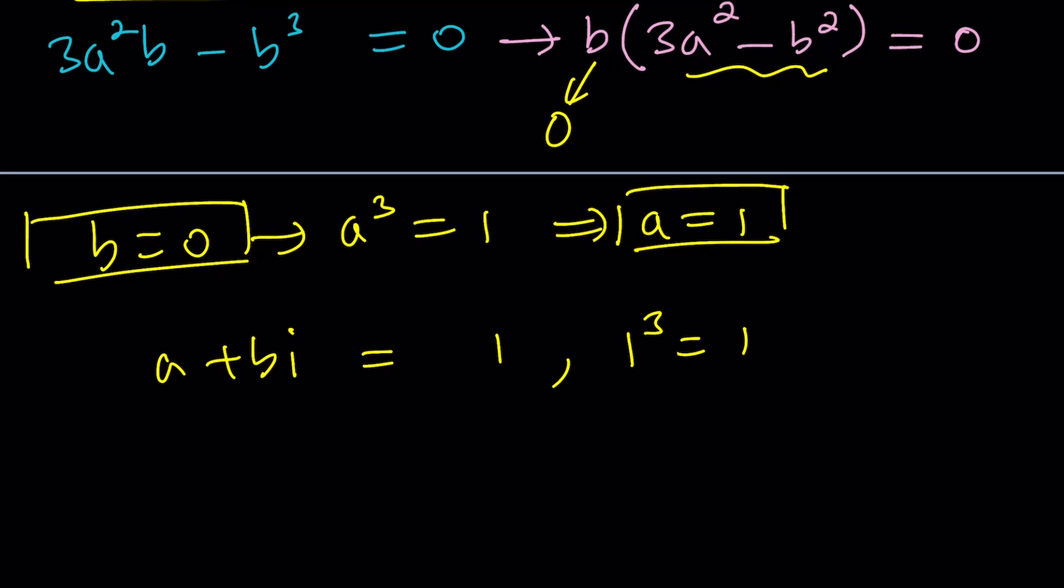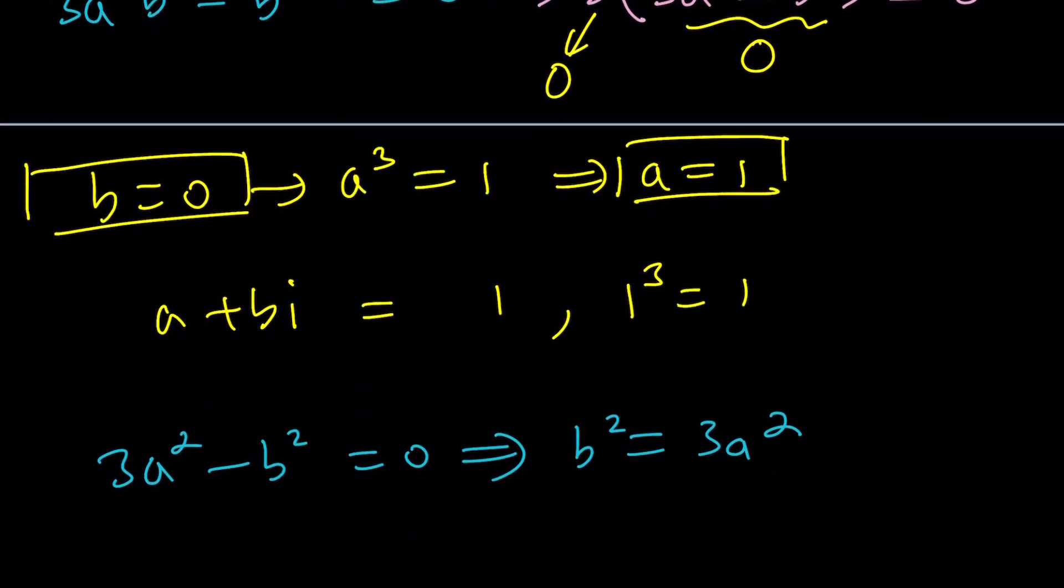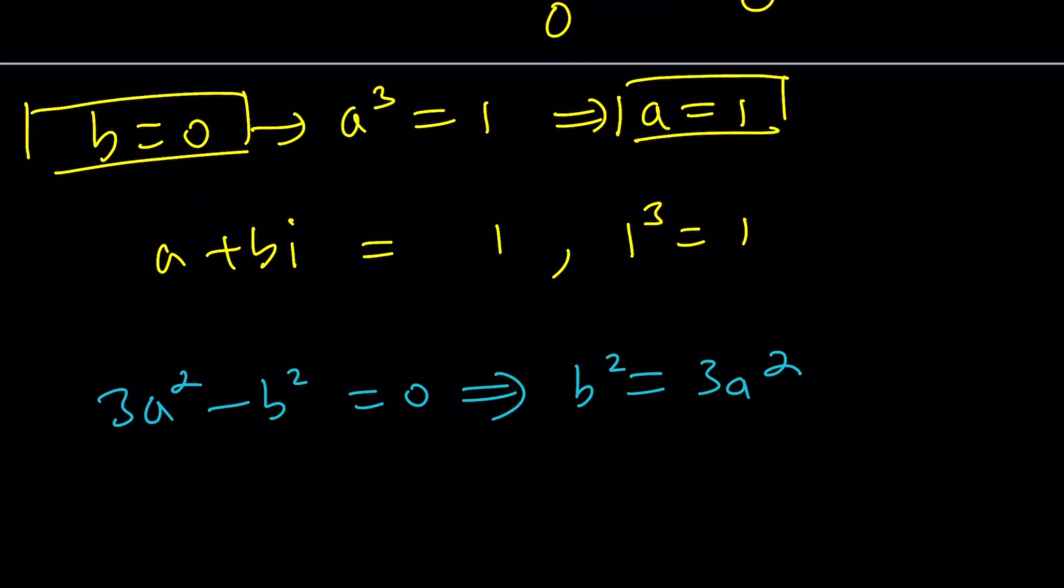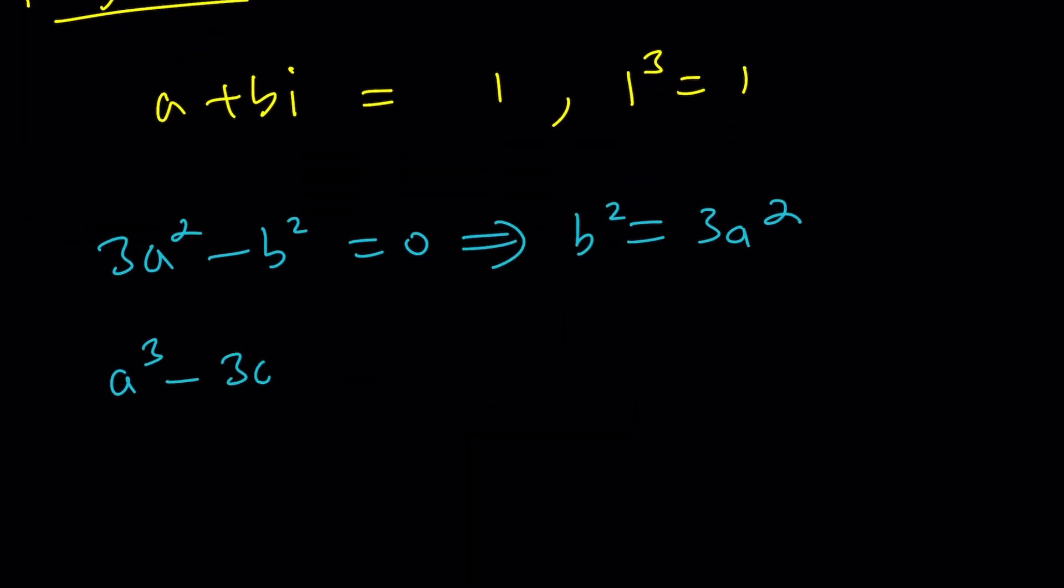But what about the other ones that are going to come from here? Let's go ahead and find out. We get 3a squared minus b squared equals 0, which implies b squared is equal to 3a squared. We do need another equation, otherwise this is going to give us infinitely many. But guess what? The first equation is right there.